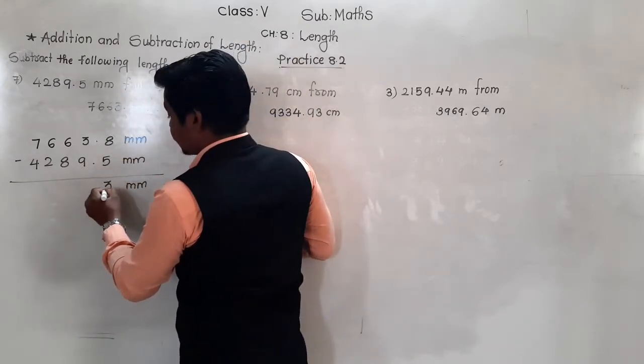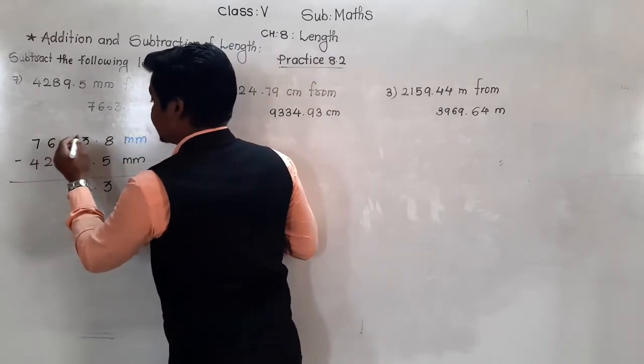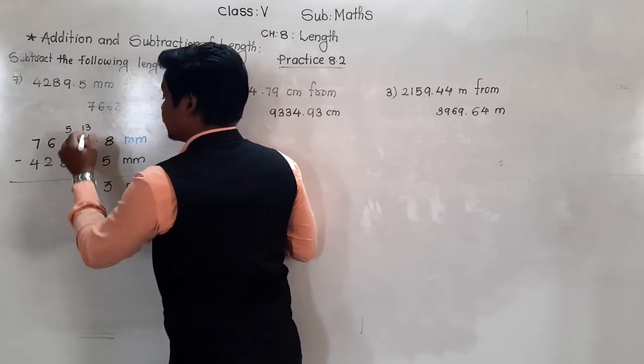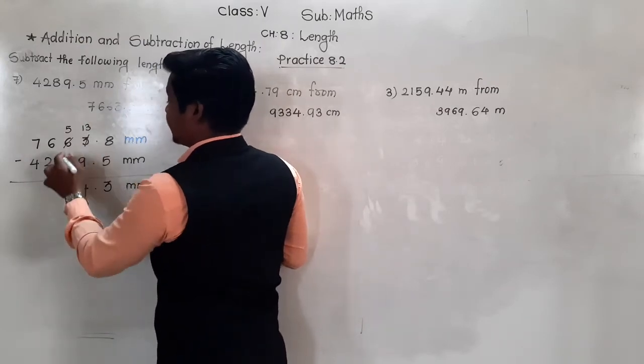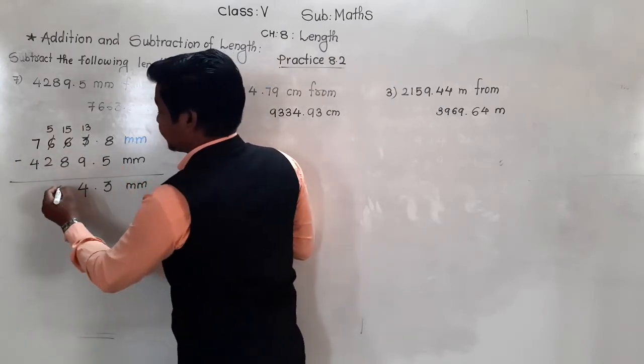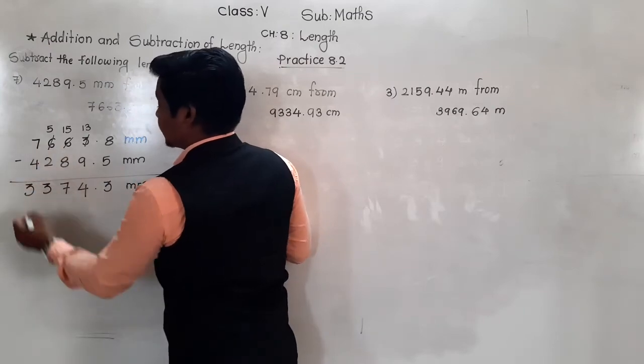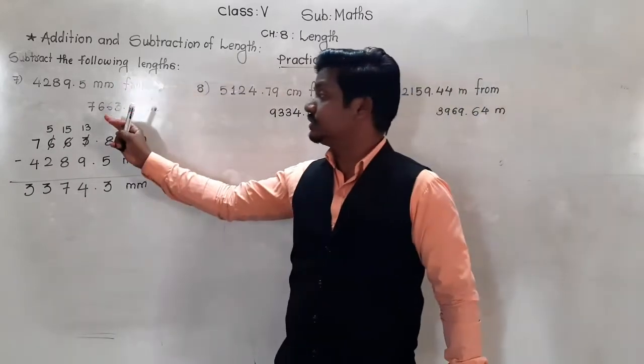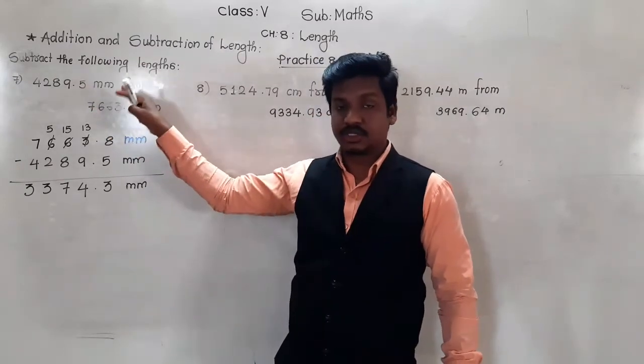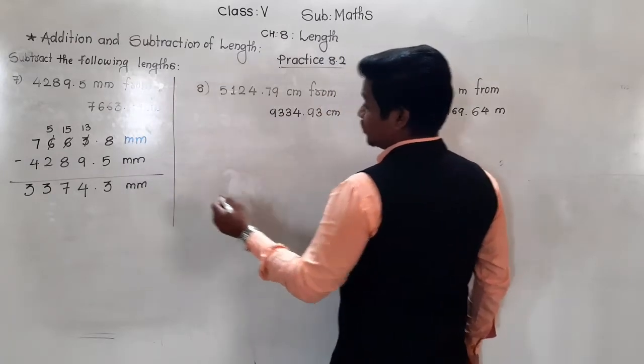8 minus 5 is 3. 3 minus 9, is it possible? No. So from this 6 let us bring 1 borrow here, 13. 6 will remain 5. 13 minus 9 is 4. 5 minus 8 is not possible. So from this 6 let us take 1 borrow here. This 6 will remain 5. 15 minus 8 is 7. 5 minus 2 is 3. And 7 minus 4 is 3. The number which is written after the word 'from', that is this length, is greater. So it should be written up and from that the smaller length should be subtracted. Otherwise we will not get the exact answer.